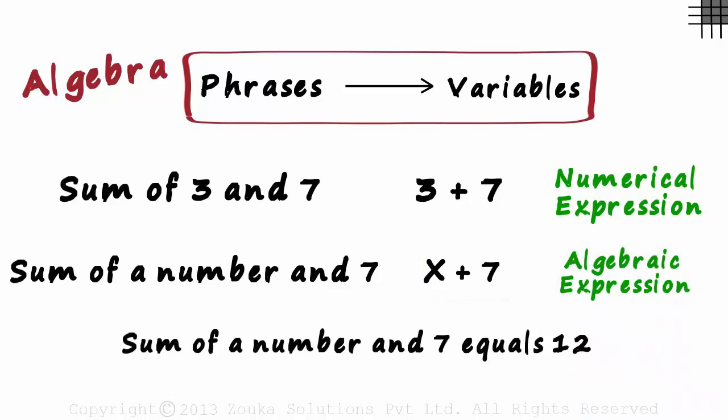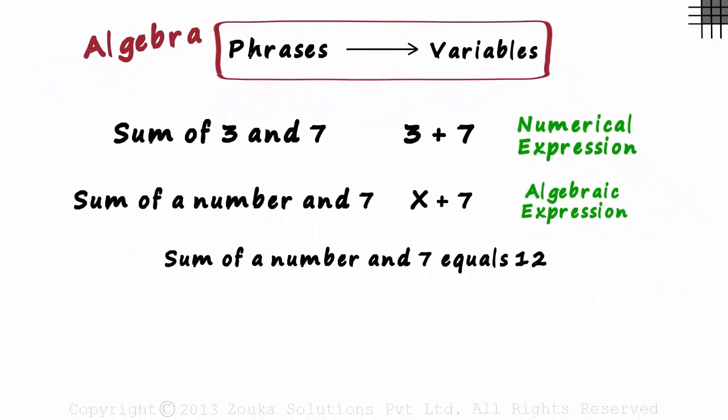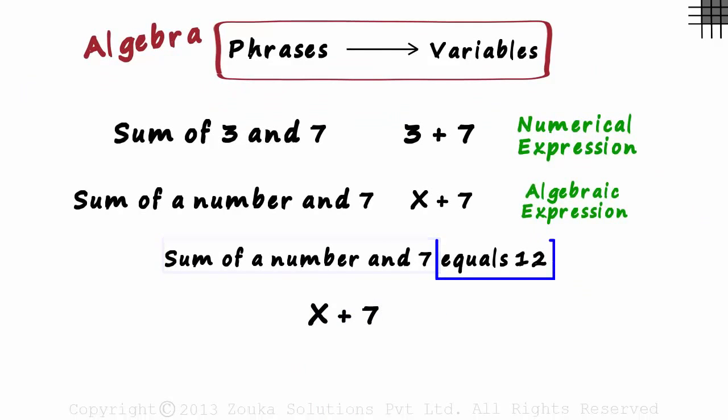Now look at this line: sum of a number and 7 equals 12. Now it gets interesting. Let's break it into parts. Sum of a number and 7 can be written as x plus 7. Equals 12 can be written as equal to 12.